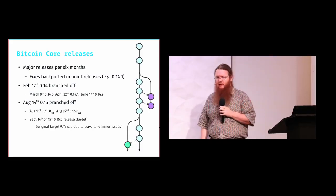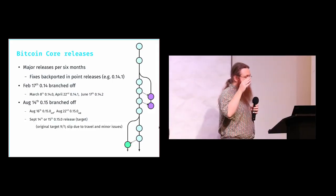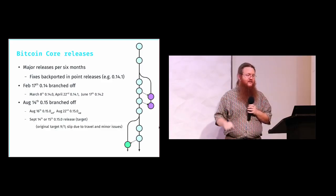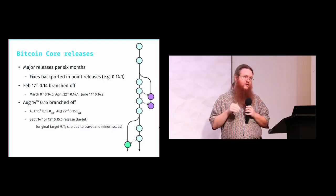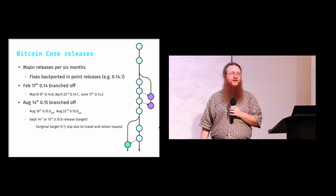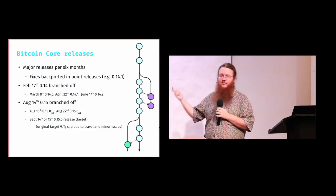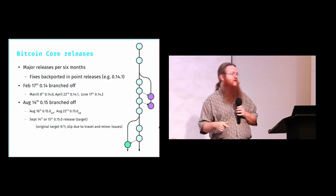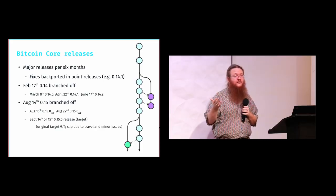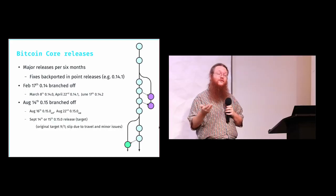A quick refresher on how Bitcoin Core releases work. There is a master trunk branch of Bitcoin development, and releases are branched off of it. New fixes that go into those releases are written to the master branch and then copied off to the release branches. This is a pretty common development process for software. What that means is that the features in 0.15 are also in 0.14.1 and 0.14.2, because 0.15 started with the release of 0.14.0, not with the release of 0.14.2.